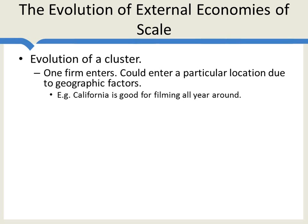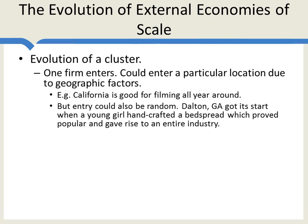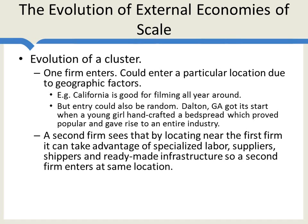So typically, first, one firm enters and it might enter at a particular location due to some geographic factors which lower its costs modestly in that location. For example, California is good for filming all year round, so it made some sense for an early movie studio to begin in California. The first entrant doesn't have to have cost advantages, however. Dalton, Georgia got its start when a young girl handcrafted a bedspread which proved particularly popular. She got her friends making similar bedspreads, and this gave rise to an entire industry. Now think about a second firm — it looks around and asks where should it locate, and it notices that by locating near the first firm, it can take advantage of some specialized labor, suppliers, shippers, and some ready-made infrastructure. So the second firm enters at the same location.